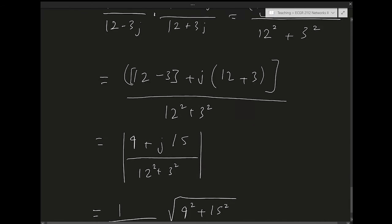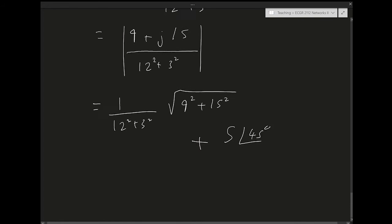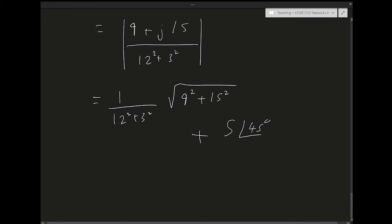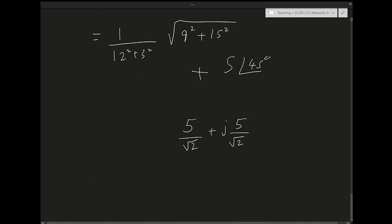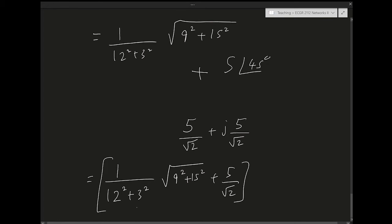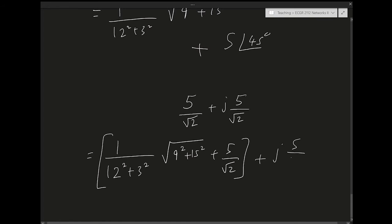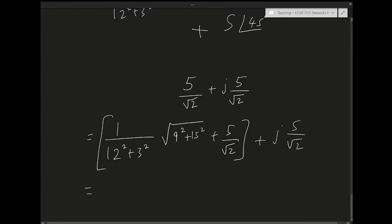This whole result gets added to 5∠45°. In rectangular form, 5∠45° = 5cos(45°) + j·5sin(45°) = 5/√2 + j·5/√2, since cos(45°) = sin(45°) = 1/√2. So the full expression is: [sqrt(9² + 15²)/(12² + 3²)] + 5/√2, for the real part, plus j·(5/√2) for the imaginary part.